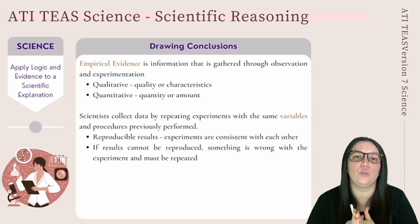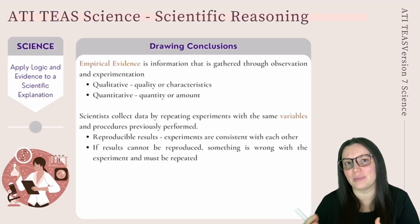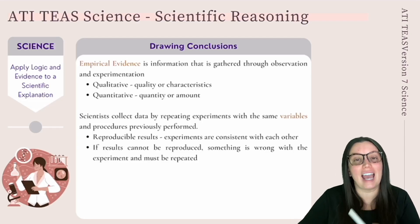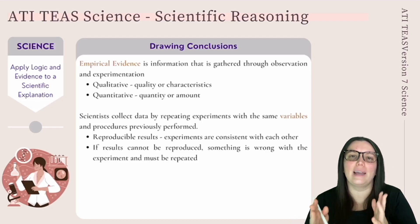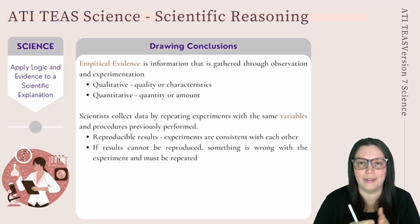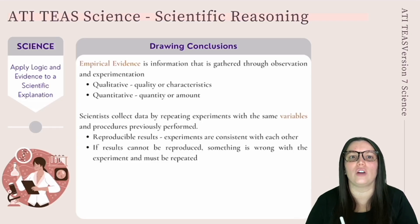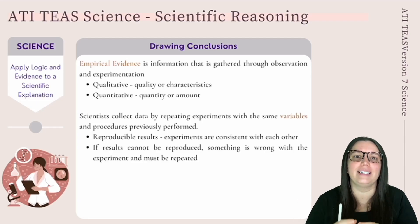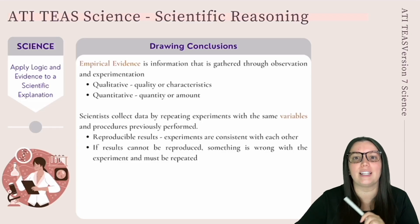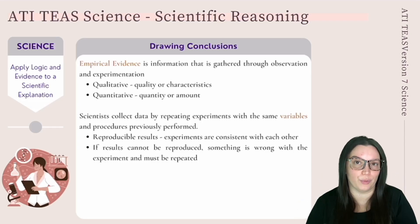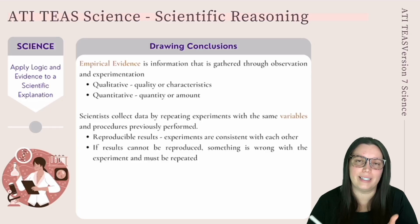In science, we use logic and evidence to understand scientific explanations by drawing conclusions using empirical evidence — information gathered through observations and experimentation. This evidence can be qualitative, described in terms of quality and characteristics, or quantitative, described in terms of amount and quantity. Experiments must be repeated with the exact same variables and procedures; when results are consistent, they are reproducible. If results cannot be reproduced, something was wrong and the experiment needs to be repeated.